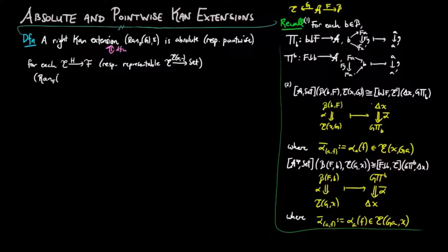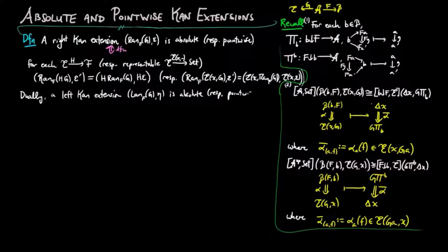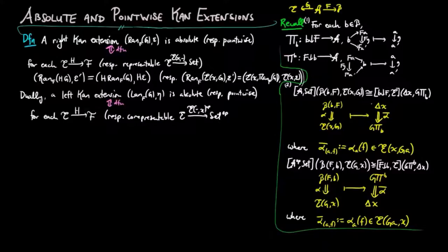This means that the right Kan extension of h∘g along f is the composition of functors h∘Ran(f,g) with natural transformation h∘ε. Respectively, the right Kan extension of E(x, g−) along f is the composition of functors E(x,−)∘Ran(f,g) with natural transformation E(x,ε). The dual for the left Kan extension follows, where we note that we take the opposite of the co-representable on x, so that it has domain category E and co-domain category the dual category of Set.